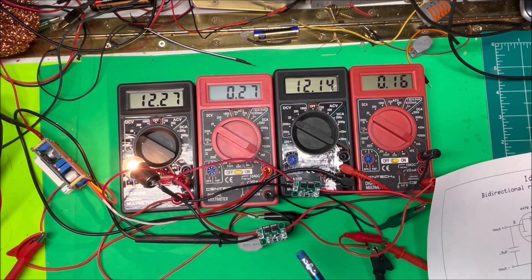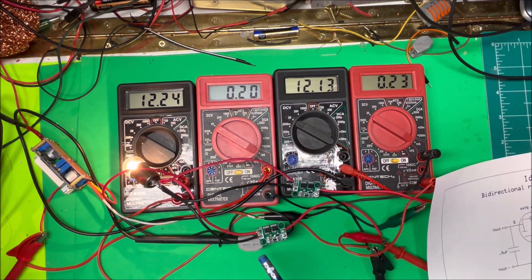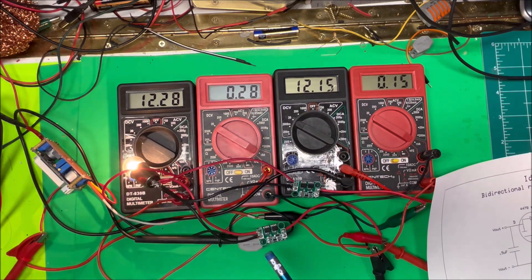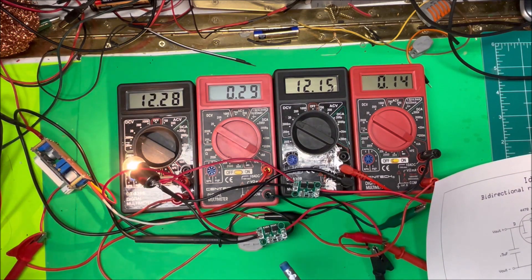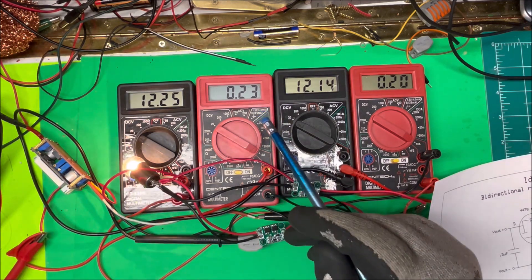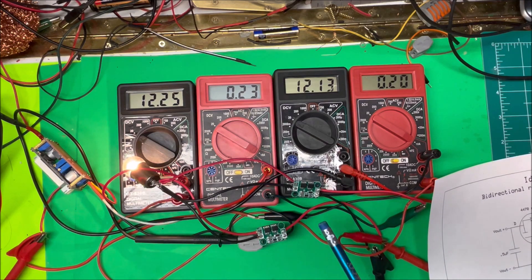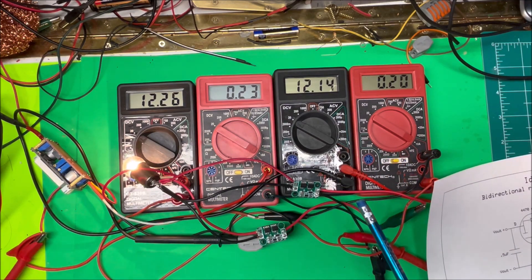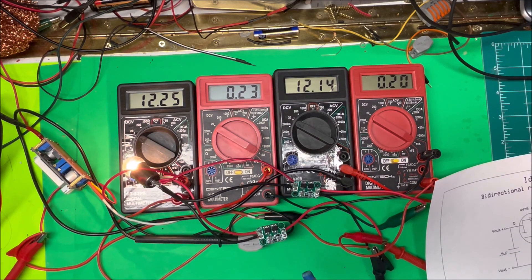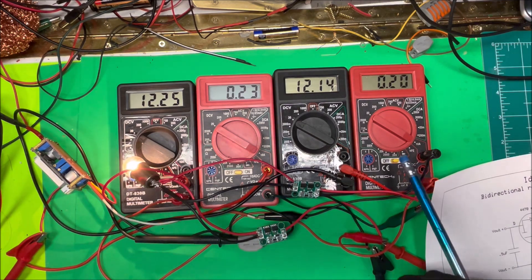Okay so they're both on and they're kind of sharing the load there. In fact I can adjust this so that they're about the same. Let's see, yeah, 0.23 amps, 0.2 amps on there. I think they're actually switching back and forth but that's working out fine. Now if I turn this one off...